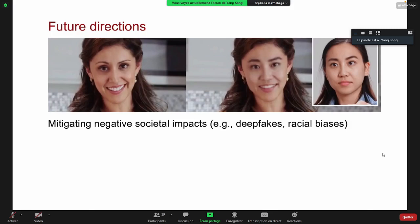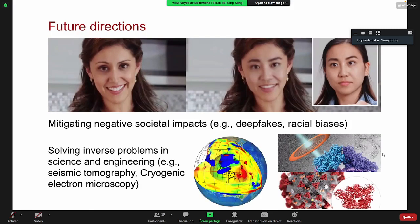From the racial biases and other biases in the training dataset. In addition, we already show some promising results of solving inverse problems in medical imaging, and the same principle can be applied to other disciplines in science and engineering. For example, we can use score-based models to solve potentially seismic tomography to detect mineral concentrations. We can also use them to do imaging for cryogenic electron microscopy, and those can be used to analyze the structures of viruses.